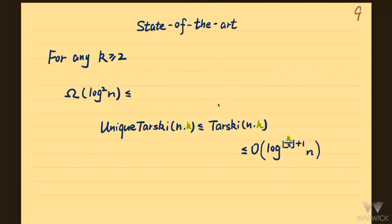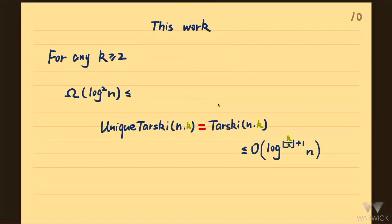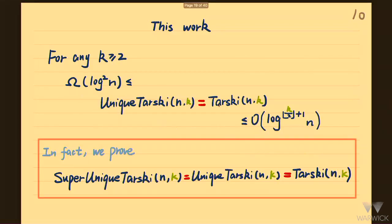To summarize the state of the art: for any constant k at least 2, we have a lower bound of log^2 n, and this lower bound also holds for unique Tarski — if you remember the construction, there is a unique fixed point. Unique Tarski is a special case of Tarski, so it is trivially at most Tarski, and Tarski is upper bounded by log^(k/2) n. In this work, we show the middle inequality is actually equality: the query complexity of Tarski is exactly the same as the query complexity of unique Tarski, and even of Tarski where every slice in every dimension has a unique fixed point.